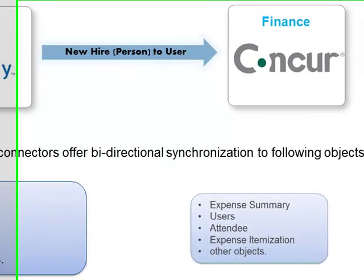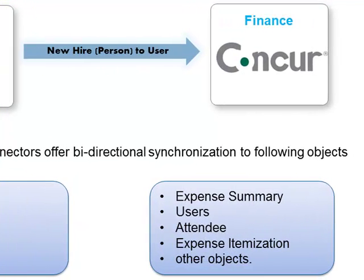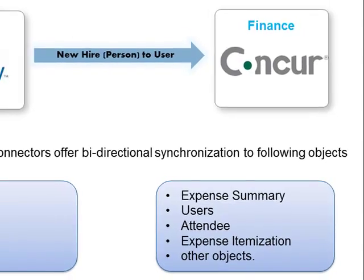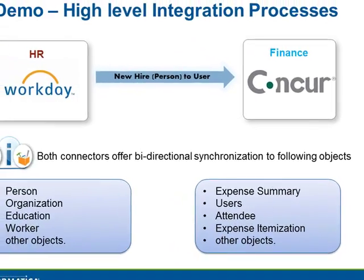Let's talk about the Concur connector. If the organization wants to attain firm control over their company's travel and expense budgetary needs, or do Concur integration to achieve other objectives, the Concur connector provides bidirectional synchronization for the following objects: expense summary, users, attendees, expense itemization, and others.